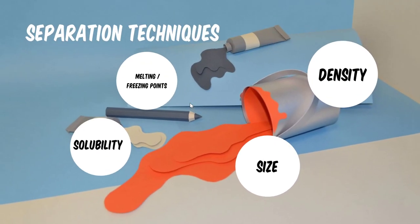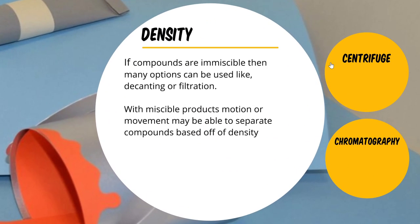The last physical property we're going to cover is density. Density is how heavy something is compared to how much volume it takes up. Everything has a different density — gold is known for having a particularly high density. If two products don't mix very well, you can use techniques like decanting or filtration. In the decanting example, the solid had a bigger density than the liquid, making it easy to decant.